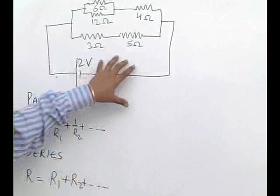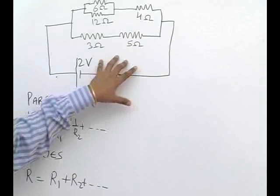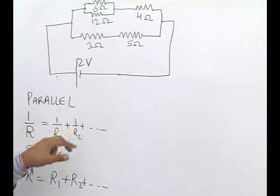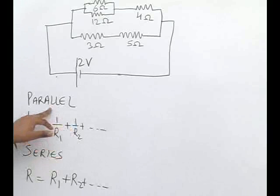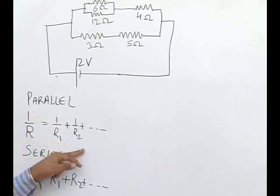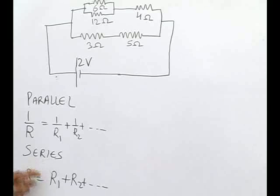Here we have been given a circuit. To solve this question, we use the fact that if resistances are connected in parallel, this is the expression to get the final resistance, and if they are connected in series, this is the expression to get the final resistance.